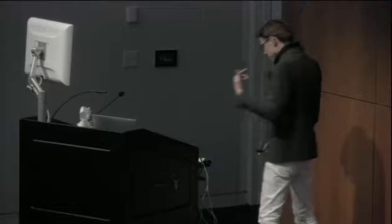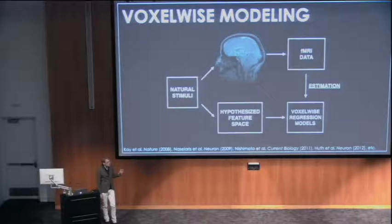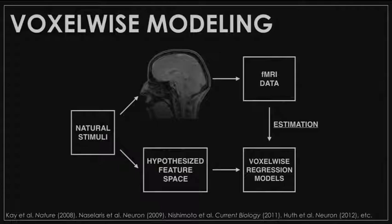Let me describe the approach we take in Jack Gallant's lab — an approach that's been developed over the past decade roughly. We call it voxel-wise modeling. What this means is that we take each voxel — one of the data points given to us in fMRI, representing a small rectangular prism of brain tissue — and with fMRI you get a measurement of roughly how much blood flow is occurring in this voxel. This is a correlate, a proxy of the neural activity that's happening there. What we're going to do is build an individual computational model for each voxel.